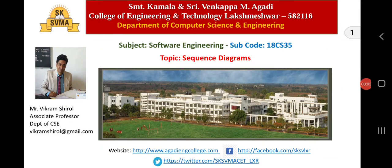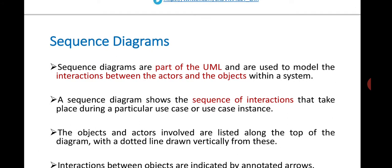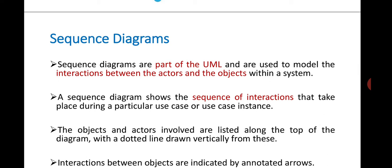In this video we will be discussing another type of system model: the sequence diagram. Sequence diagrams are a type of interaction model. In the previous video we discussed the use case model, and these two — use case models and sequence diagrams — are the two types of diagrams that come under interaction models. We'll cover the purpose of sequence diagrams, their notations, and work through one or two examples.